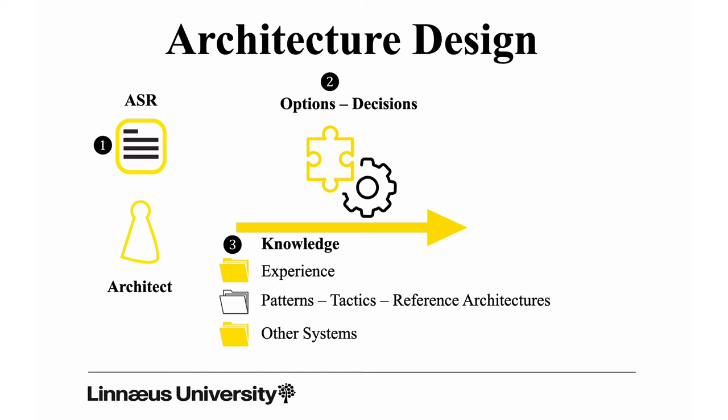The third source of knowledge is other systems. There is most often — I should say always — a similar system out there that you can look at, study, and find different options for your decisions. The decisions you make are based on the knowledge you have, so the more time you invest in finding and eliciting knowledge about the current ASR and providing options for your decision making, the better off you are. Your decisions are then represented in views.